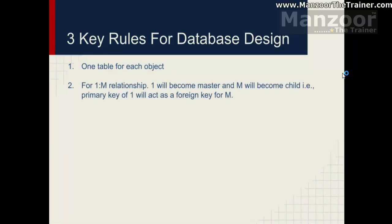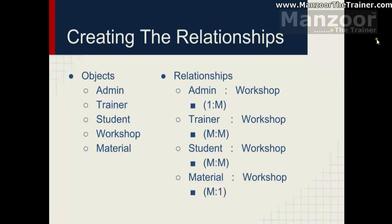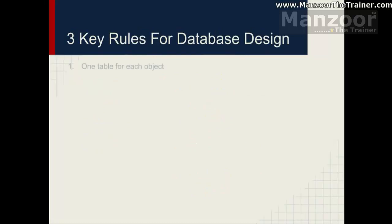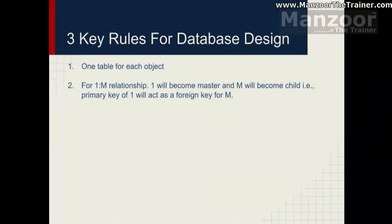The second rule covers one-to-many relationships. For example, admin and workshop have a one-to-many relationship. In this kind of scenario, the one side will become the master table and the many side will become the child table. The primary key of the master table will act as a foreign key in the child table.